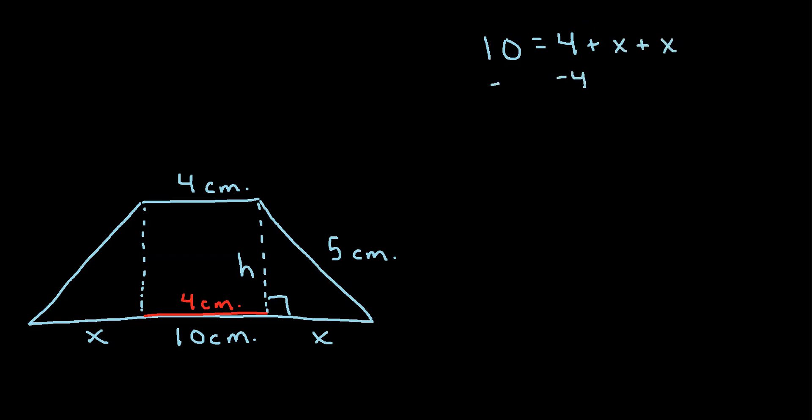So if we subtract the 4 from each side, we get 10 minus 4, 6 is equal to x plus x, that's just 2x. So to solve for x, we can divide by 2, 6 divided by 2 is 3. On this side, the 2's cancel out and we're left with 3 is equal to x. So this distance right here is 3, so we'll say 3 cm.